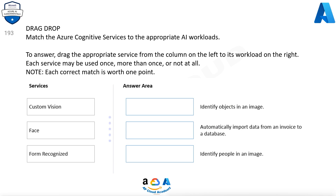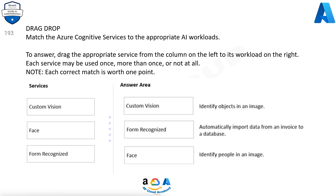Question 193. Match the Azure Cognitive Services to the appropriate AI workloads. Drag the appropriate service from the column on the left to its workload on the right. Each service may be used once, more than once, or not at all. Each correct match is worth 1 point. Services: Custom Vision, Face, Form Recognizer. Answers: Custom Vision — Identify objects in an image; Form Recognizer — Automatically import data from an invoice to a database; Face — Identify people in an image.